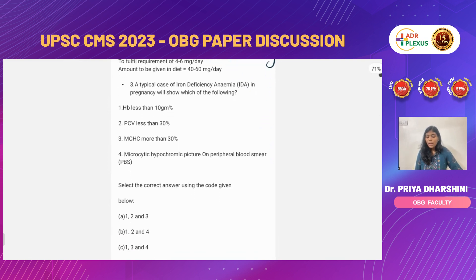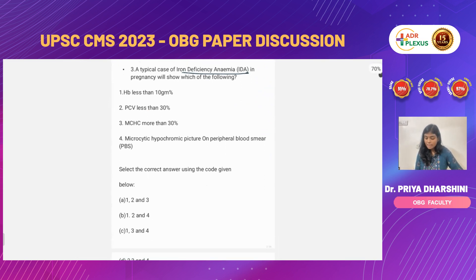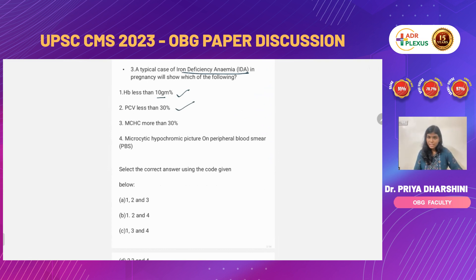The next question: a typical case of iron deficiency anemia in pregnancy shows which of the following? Using common sense: hemoglobin less than 10 mg per day, and PCV or hematocrit less than 30%. Whenever hemoglobin is less than 10, PCV is obviously less than 30%, and MCHC is more than 30%.